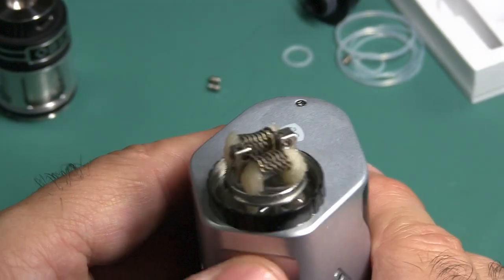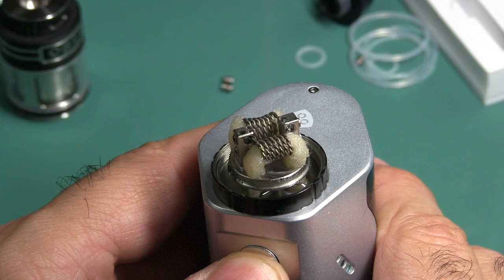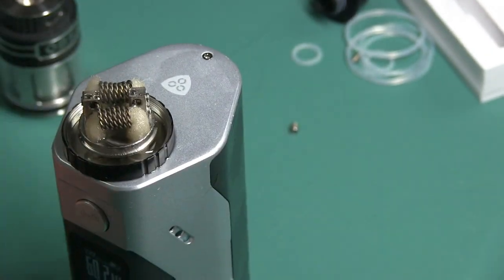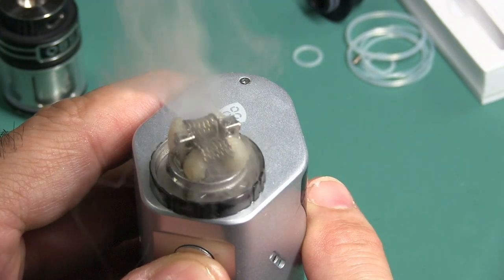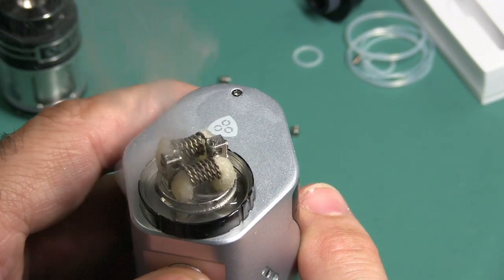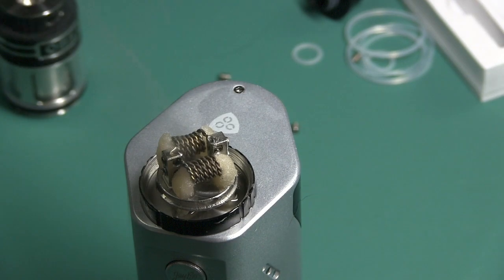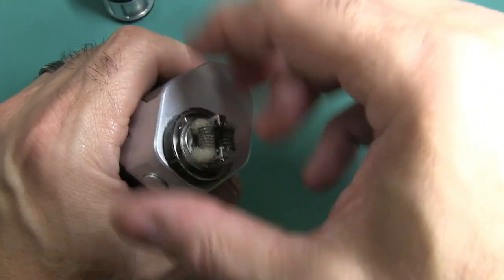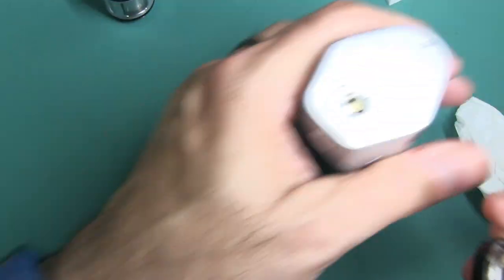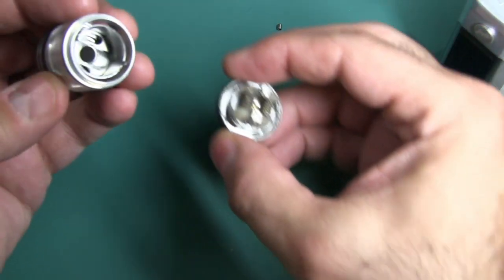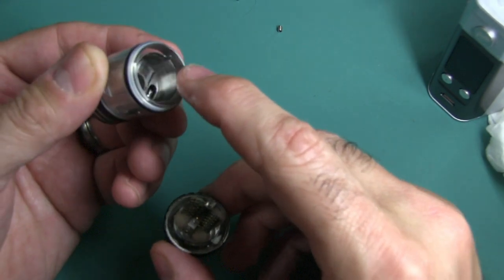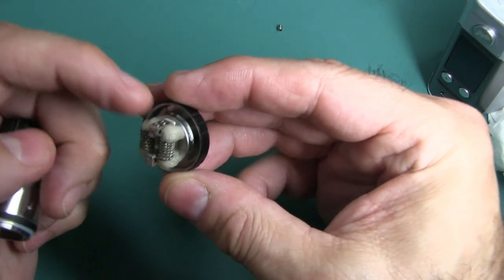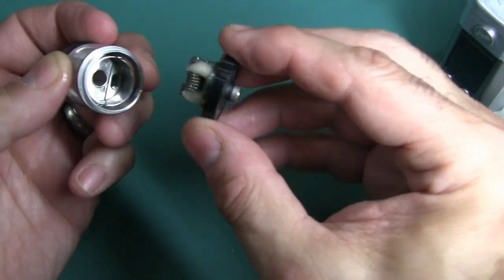And let's see how well she, whoo, okay, we are definitely producing some serious vapor there. So looking good. Okay, so what do we do next? We've got to put the rebuildable deck back in. And then again, it's keyed. You have those two tabs. You've got to line that up with the two tabs on the outside of each post.